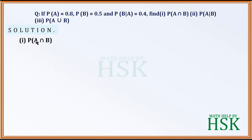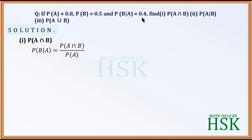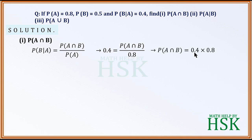For the first part, we calculate probability of A intersection B. We write: probability of B given A is equal to probability of A intersection B upon probability of A. Since probability of B given A is 0.4 and probability of A is 0.8, we substitute these values to get probability of A intersection B equal to 0.4 into 0.8, which equals 0.32. This is the required answer for the first part.